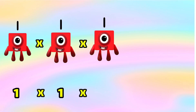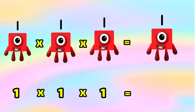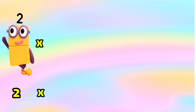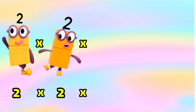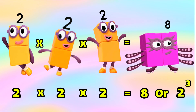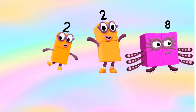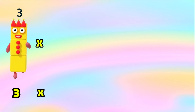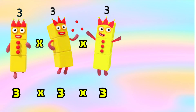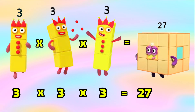1 times 1 times 1 is equals to 1, or 1 cube. 2 times 2 times 2 is equals to 8, or 2 cube. 3 times 3 times 3 is equals to 27, or 3 cube.